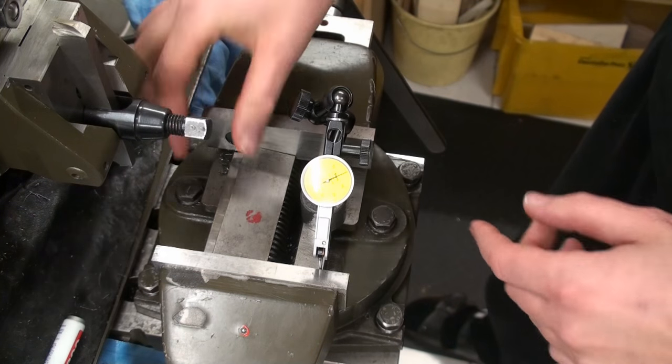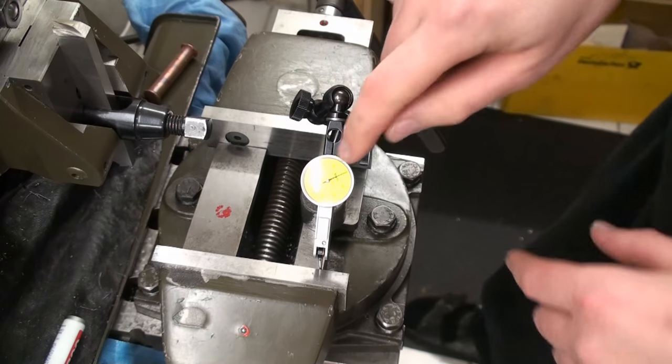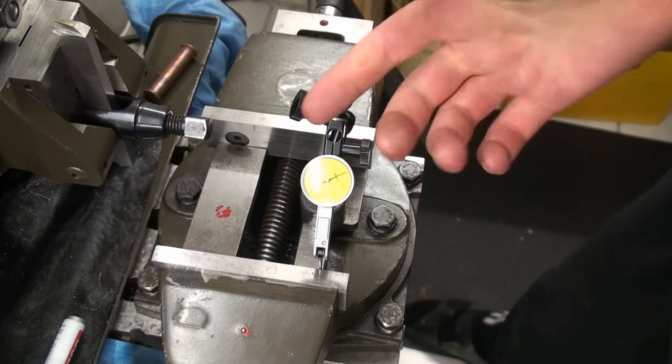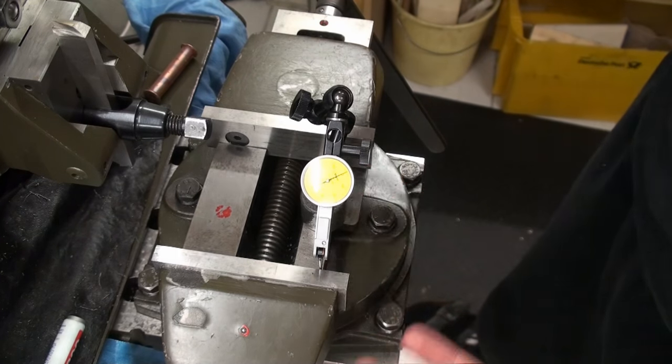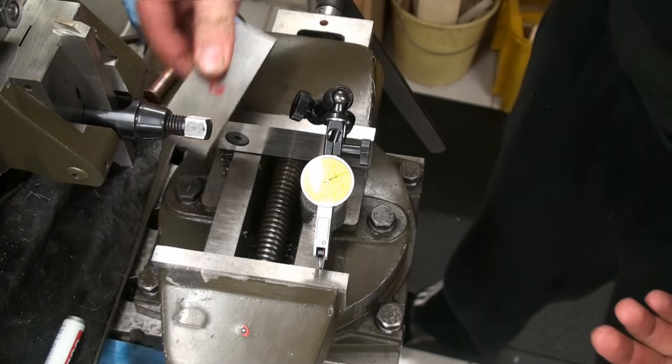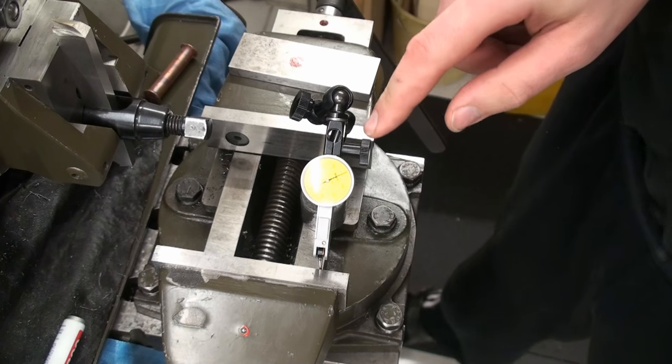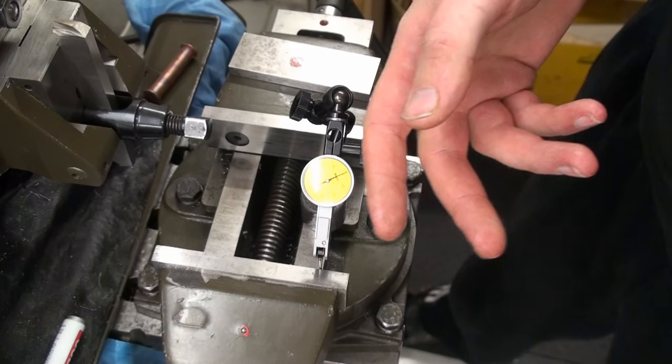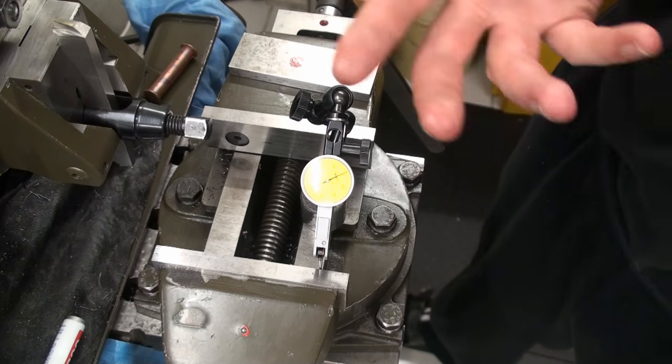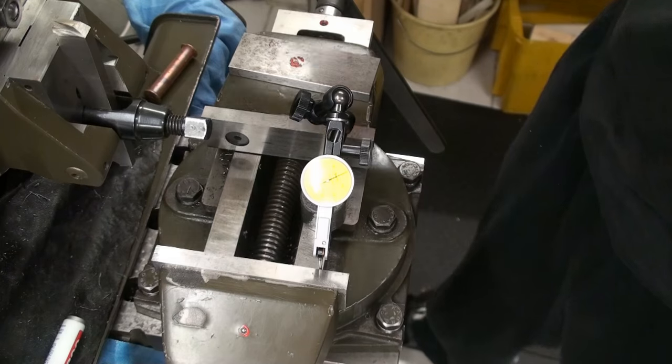And again it goes back to zero, or almost. These dial test indicators, of course, also have an error in them. By the datasheet, if you buy a good one, it comes with a proper test report. These have an error of about three thousandths of a millimeter.